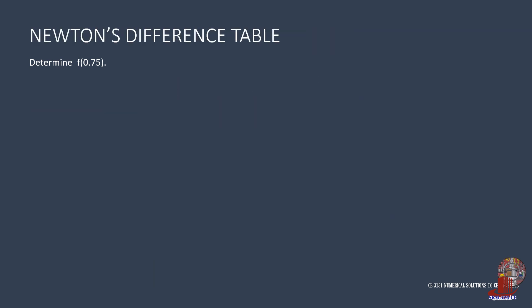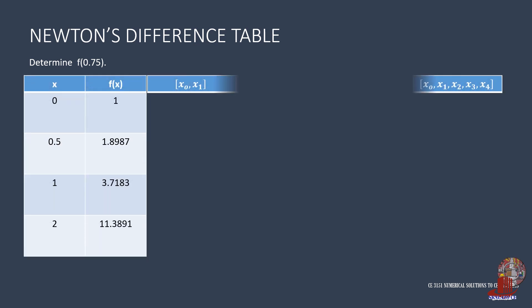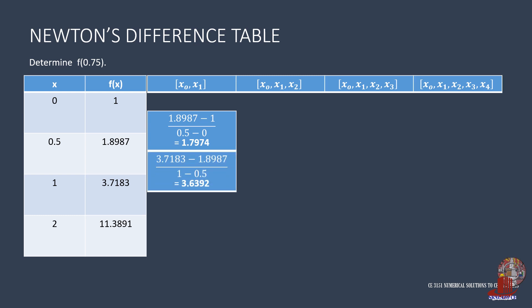Let's complete Newton's divided difference table first. The first column starts with 1.8987 minus 1 divided by 0.5 minus 0. Next is 3.7183 minus 1.8987 all over 1 minus 0.5. Then, 11.3891 minus 3.7183 all upon 2 minus 1, which results to 7.6708.